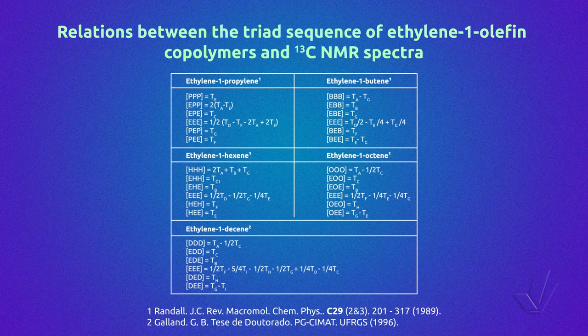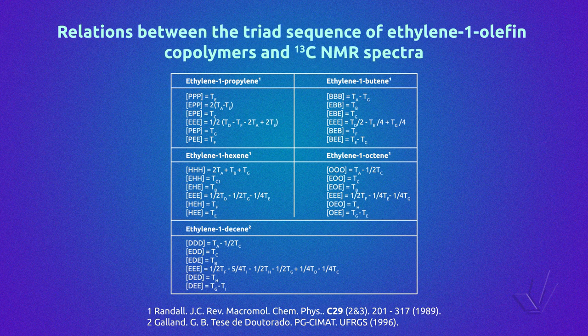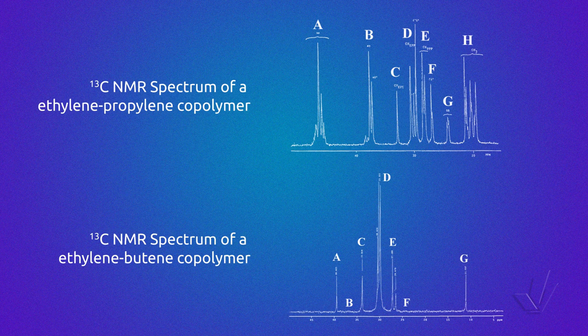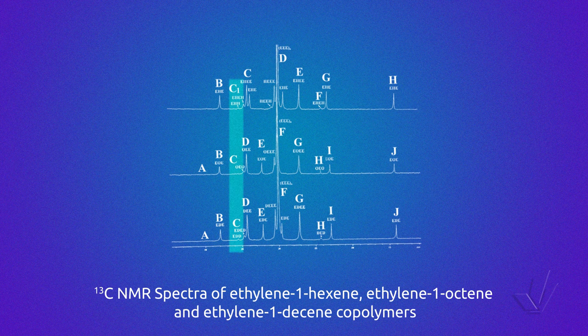Randall, in a very complete work, related the triads with carbon-13 NMR integrals of ethylene–1-olefin copolymers, with the 1-olefin ranging from propylene to 1-octene, and we extended it to 1-decene. The results are in the next table. The integrals called by letter T, related to the triads, are not individual integrals but integrals from areas of the spectra. Here, spectra of ethylene-propylene and ethylene-1-butene copolymers are shown with letters A to H over the resonances, indicating the respective areas corresponding to the integrals in the table. Sometimes it is more convenient to calculate integrals from an area rather than individual peaks to minimize errors due to overlapping.